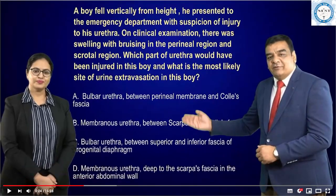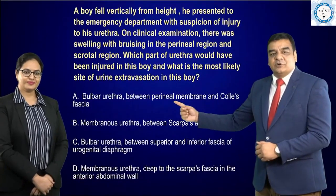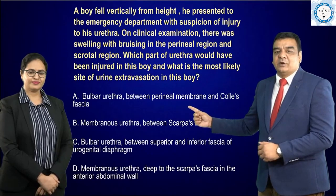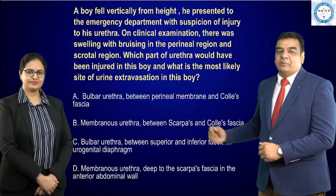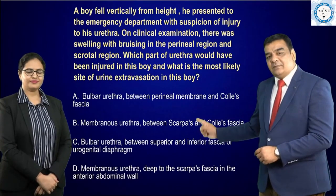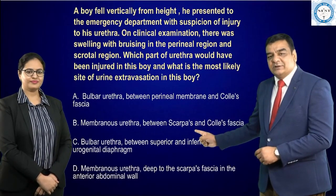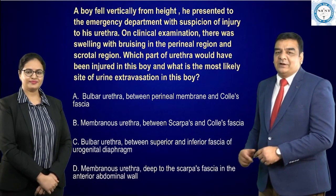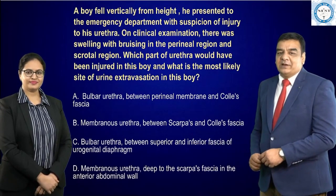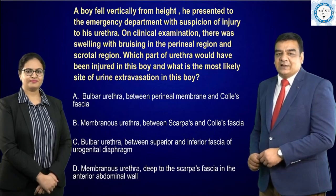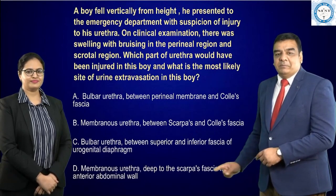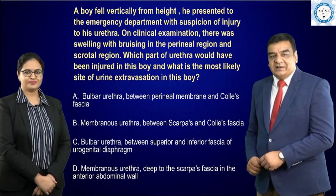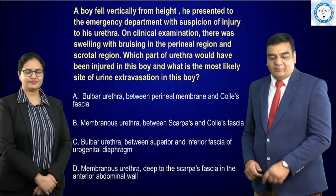The options given are: bulbar urethra with extravasation between the perineal membrane and the Col's fascia; membranous urethra between Scarpa's and Col's fascia; bulbar urethra between superior and inferior fascia of the urogenital diaphragm; or membranous urethra deep to Scarpa's fascia in the anterior abdominal wall.